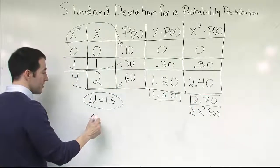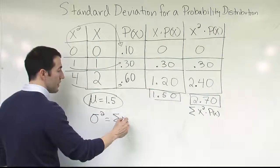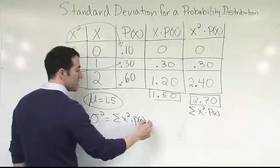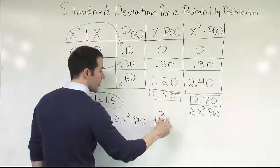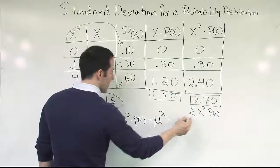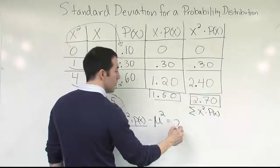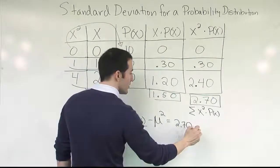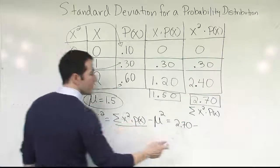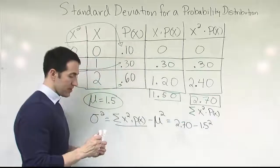So let's start back with the variance formula. To get the variance, we use the sum of x squared times p of x, minus the mean squared. So we can fill that in now. We know this value. The sum of x squared times p of x is given as 2.70. Then we'll subtract off the mean squared. Well, the mean was the 1.5. So 1.5 squared. That value is going to be the variance.